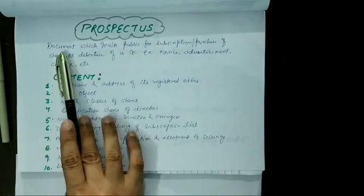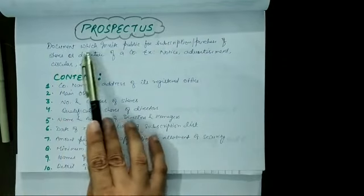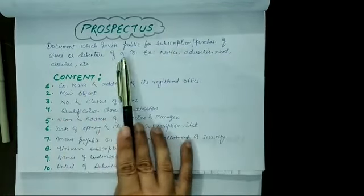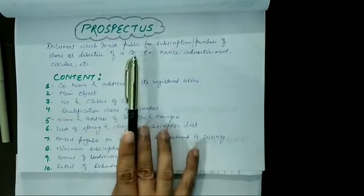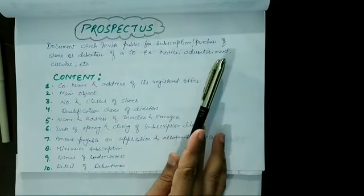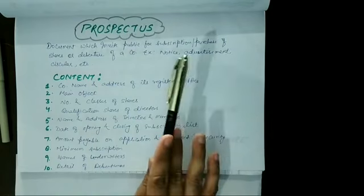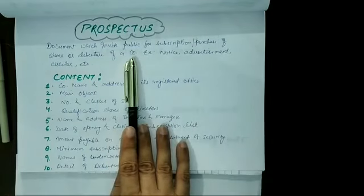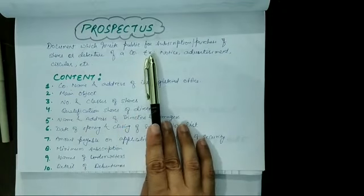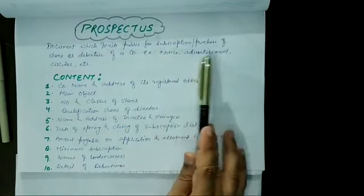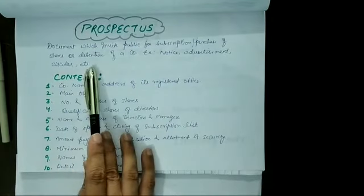Prospectus is a document which invites the public for subscription or purchase of shares or debentures of a company. Prospectus क्या होता? Document होता, जो public को issue किया जाता है, जिसको देखकर public purchase कर सकती है company के shares या debentures. It will be in the form of notice, advertisement, circulars, etc.